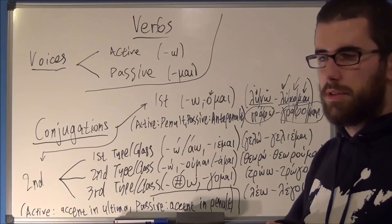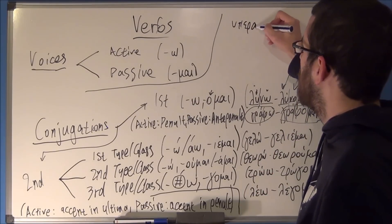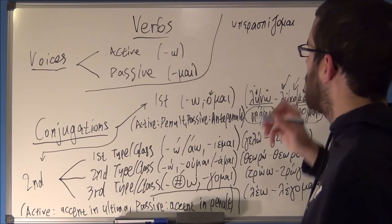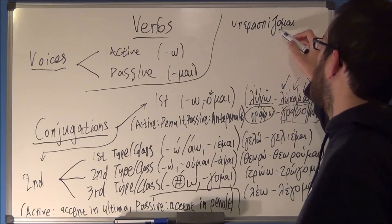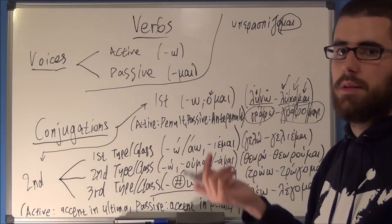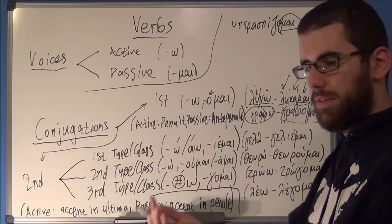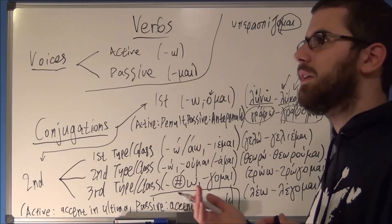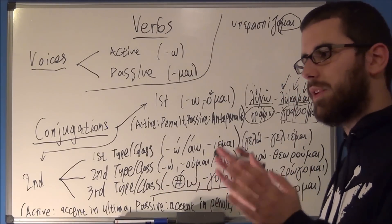For example, a good example of that is YPERASPIZOMAI, which is to defend, to support, and stuff like that. Which is a passive voice verb. As you can see, it has meh at the end, so it's definitely passive. But it's meaning is to defend. It's, I defend something, I do not just defend myself. So, you might encounter this kind of verb. It's not really that important.